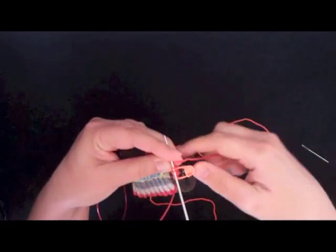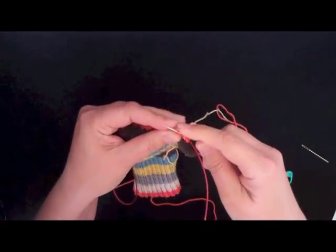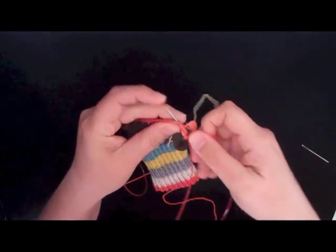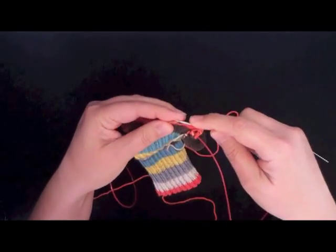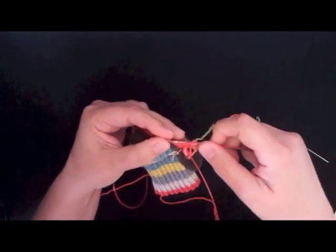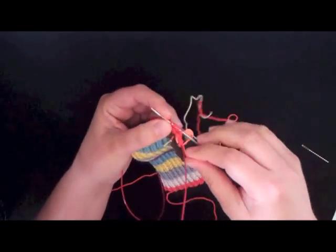And you'll see that when you come back to those two stitches that you just cast on, it'll be obvious that you need to knit them. And then you just keep continuing up the hand according to the instructions.